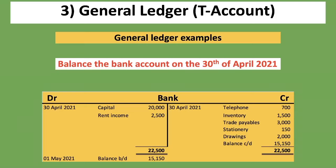In the next month, when you start doing May's transactions, you begin with 'balance brought down: 15,150 rand' at the top of the debit side and then add the new transactions below. Similarly, if you were told the opening balance for April was 10,000 rand, you would write '1 April 2021 — balance brought down: 10,000 rand' at the top. Balance brought down is used both when balancing off and as the opening balance for an account.